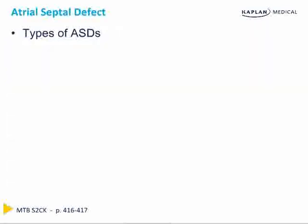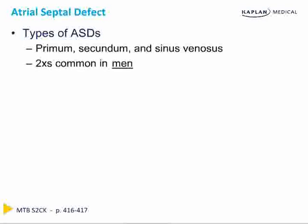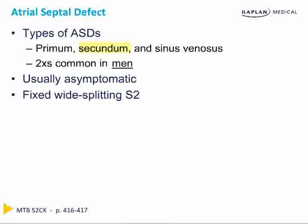Now for ASD — there are three types: primum, secundum, and sinus venosus. They're more common in males, and the most common type is secundum, which results from failure of formation of the secondary septum. Secundum is less troublesome than sinus venosus or primum types. You don't need to review atrial septum embryology for step two — just know that ASDs are common, more common in males, and secundum is the most common type. These patients are usually asymptomatic; when discovered, it's often coincidentally when a clinician picks up a fixed, widely split S2.